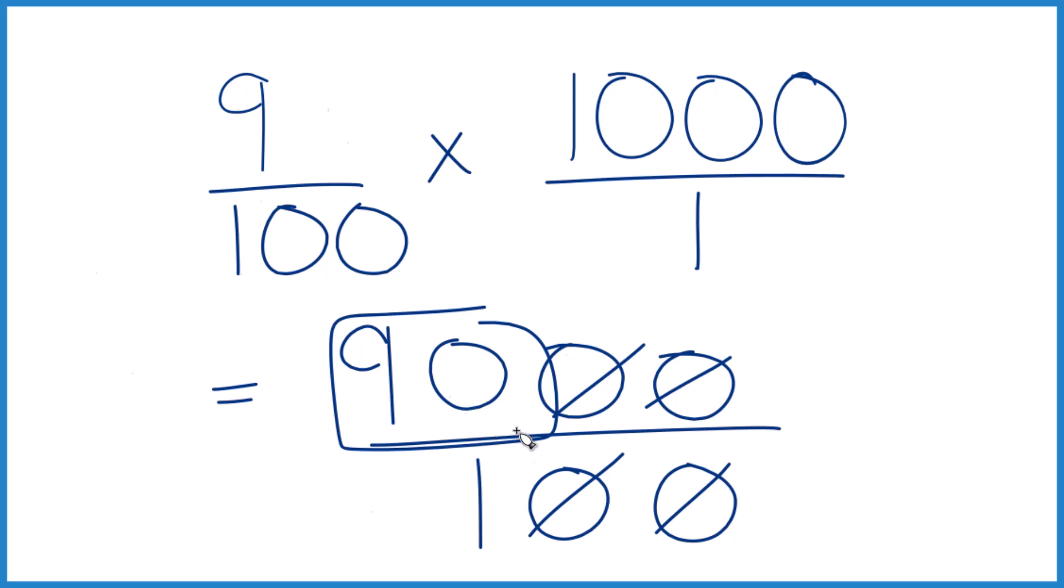One more way you could do this. You could take 9 divided by 100, you get 0.09, and then multiply that by 1,000. That would also give you 90.